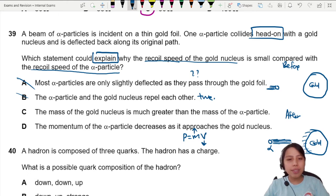C. The mass of gold nucleus is much greater than the mass of alpha particle. Oh yes, this one is definitely what explains the difference in recoil speed. So we can choose this.